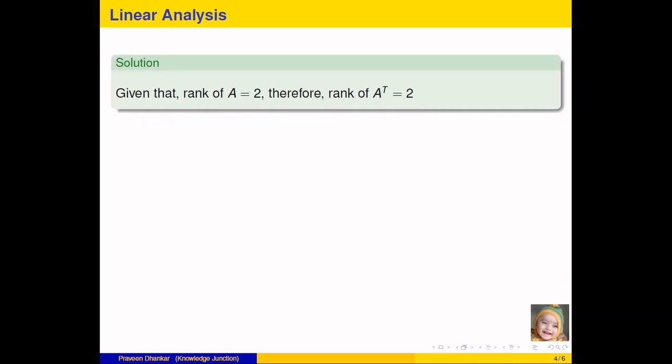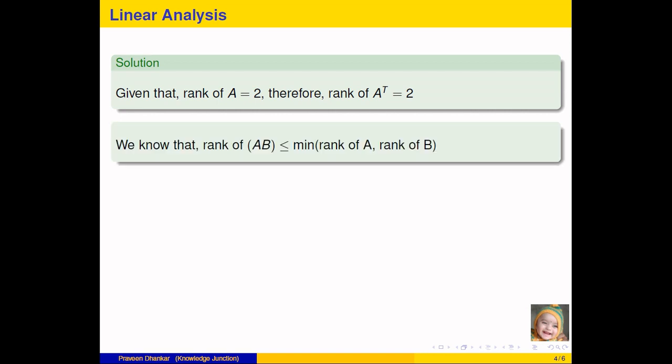What we have given is that rank of A equal to 2. Therefore, rank of A transpose also equal to 2. We know that rank of AB less than equal to minimum of rank of A, rank of B. This is a beautiful formula which we remember for the rank of multiplication of 2 matrices.